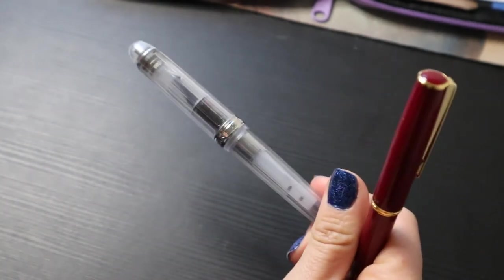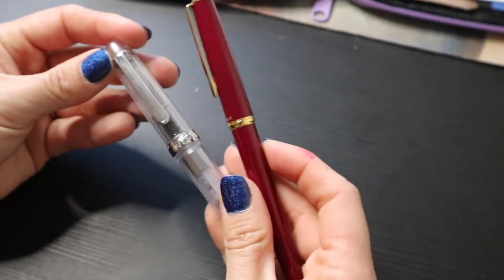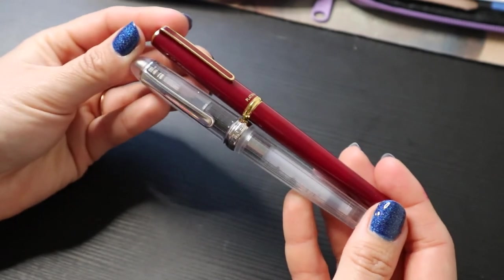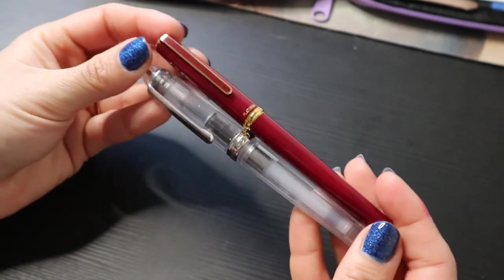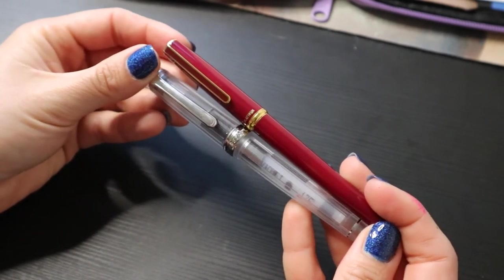But yeah, different, very different from the 3776. Price point also very different. Although I must say, you can get the 3776 in the regular lineup fairly cheaply from eBay Japan, so you could try that.